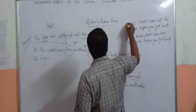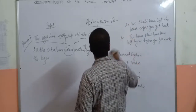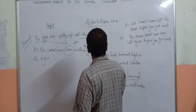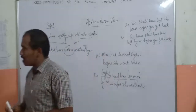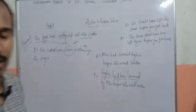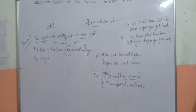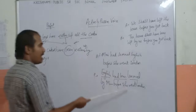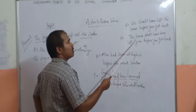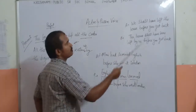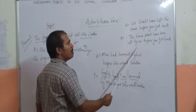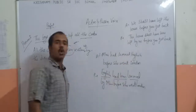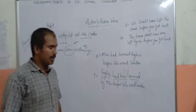So this is in active, and this is in passive. What we have come across here: 'the house' is the object in active, which becomes subject in passive; 'shall have' is there; 'been' is added to it; 'left by us' — 'us' is the object; and the continuation carries forward that way.